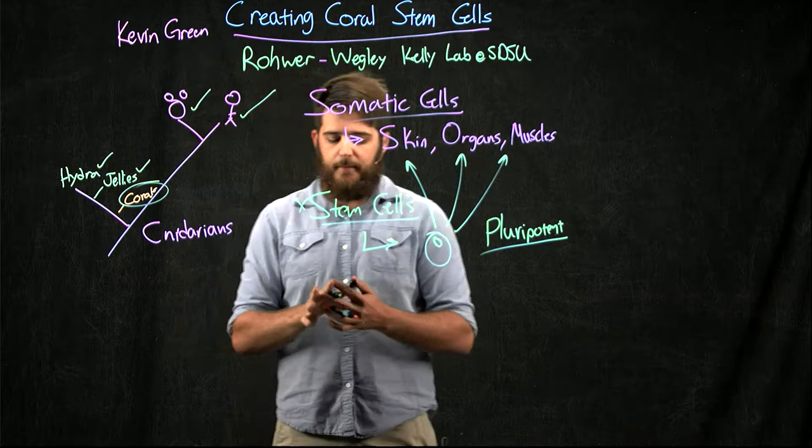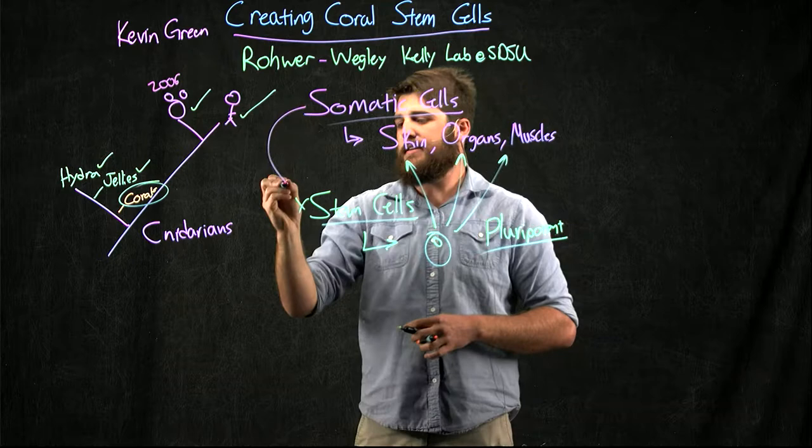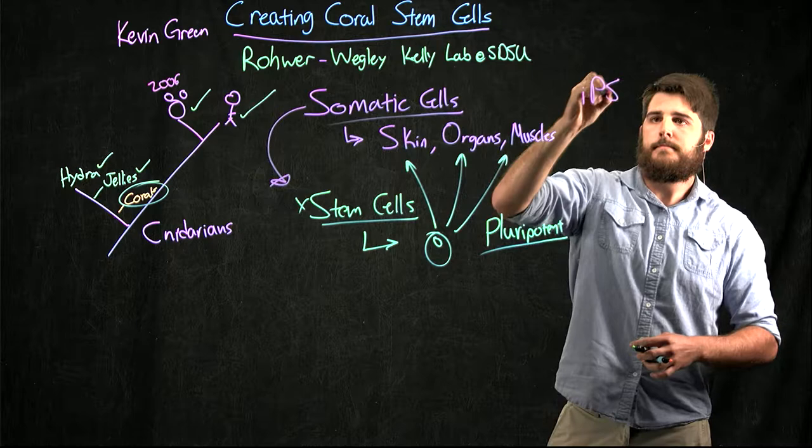Since we can't find them, I hope to create them. In 2006, researchers were able to take somatic cells from mice and induce this pluripotency, so we call these iPSCs.